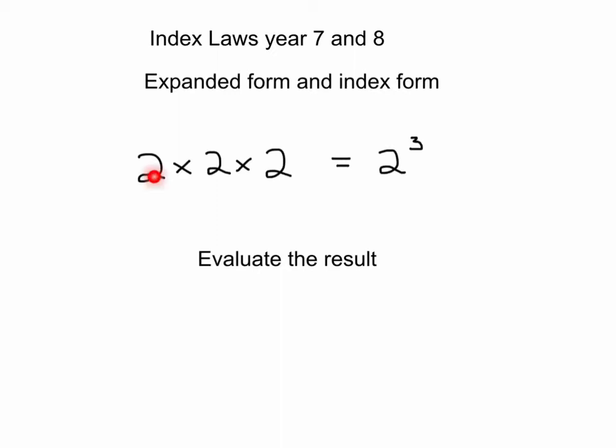Expanded form is when you have everything multiplied together, single powers, and index form is when you've written it in the short version which has the base and the index. To evaluate the result, you're actually finding what the final answer would be, and the answer of this is 8 because you have 2 times 2 times 2 equals 8.